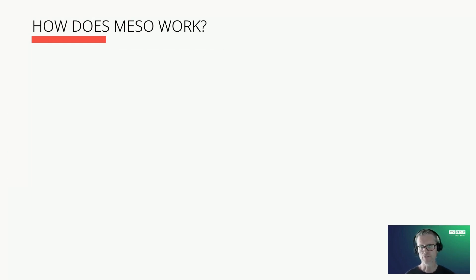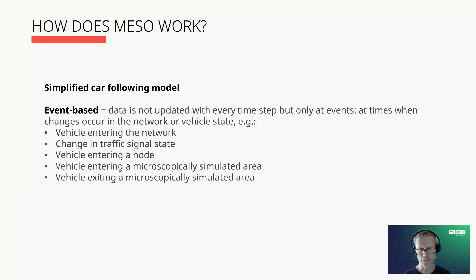So how does the mesoscopic simulation work? I mentioned it works with individual vehicles but uses a simplified car following model. It is event-based, which means that data is not updated with every time step but only at so-called events—at times when changes occur in the network or vehicle behavior. In contrast to the microscopic models which run with high temporal resolution where data is updated like 10 times in a second.